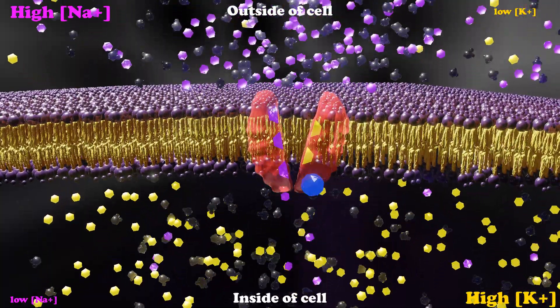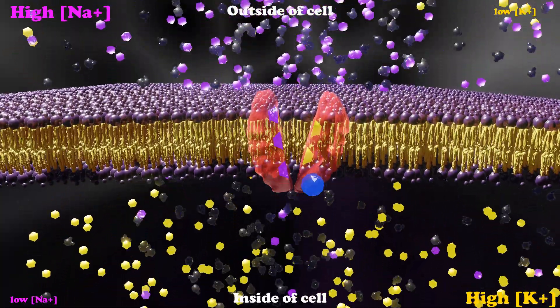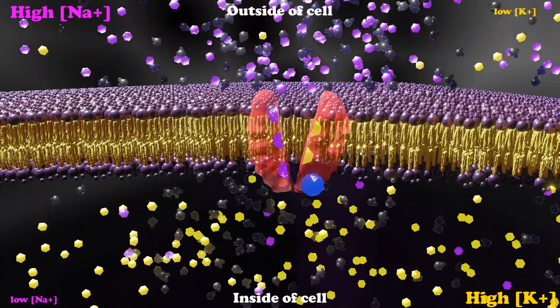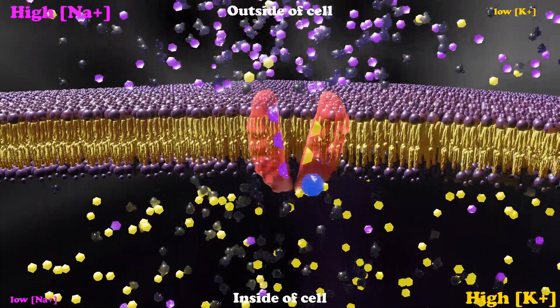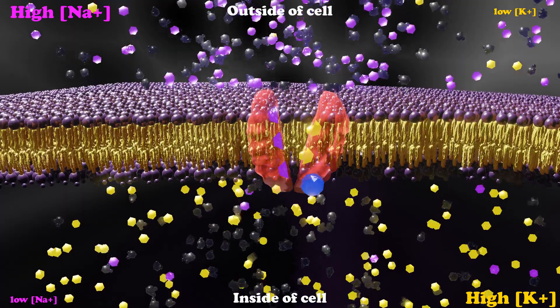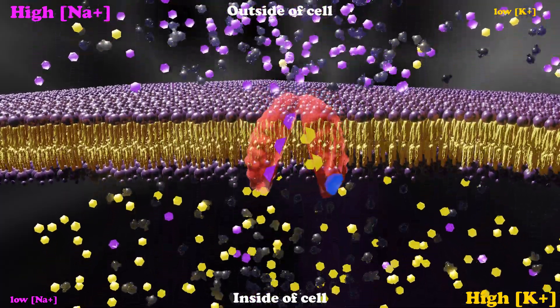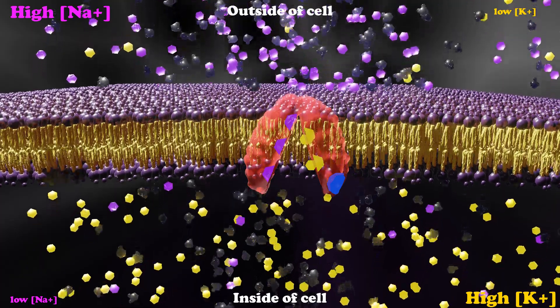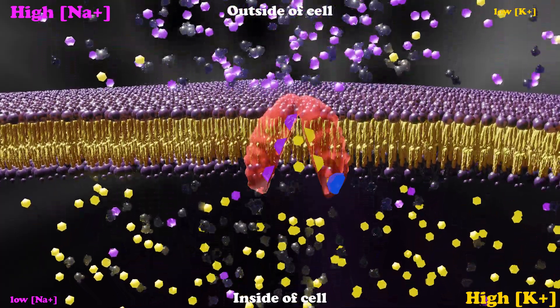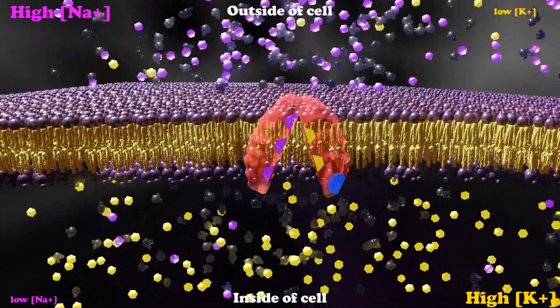At that point, potassium binding sites are now revealed, which is going to allow the potassium to bind. When the potassium actually does bind, it kicks off the free phosphate, which causes a second conformational change and opens the door for potassium to come into the cell.